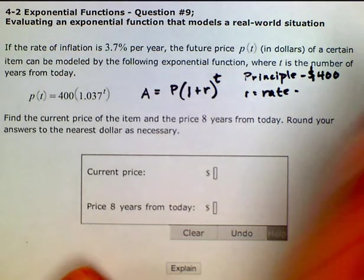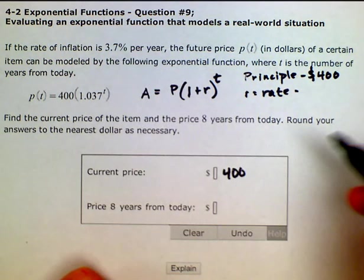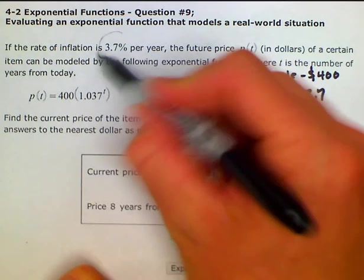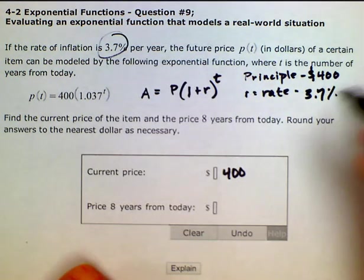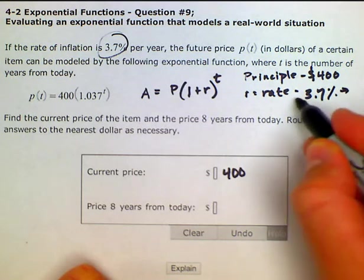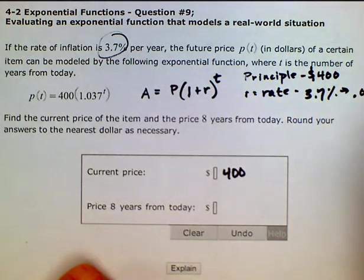So that's actually our current price, $400, and then our rate is 3.7% per year. If we were to write that as a decimal, you move the decimal back two places, it becomes 0.037.